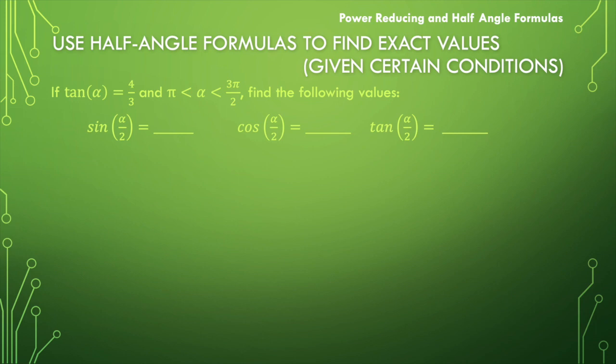Consider this situation. We know that the tangent of alpha is 4 thirds and alpha lies somewhere between pi and 3 pi over 2. We are interested in the following values: the sine of alpha over 2, the cosine of alpha over 2, and the tangent of alpha over 2.